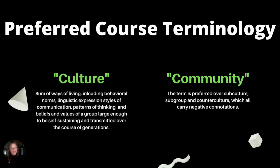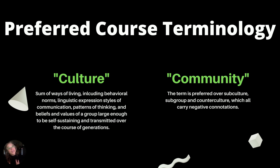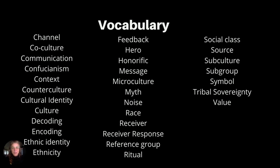That was a lot — what's the takeaway? Here is our preferred course terminology. In this course, we will prefer the terms culture and community. Culture is the sum of the ways of living, including behavioral norms, linguistic expression, styles of communication, patterns of thinking, beliefs, and values of a group large enough to be self-sustaining and transmitted over the course of generations. Community is the term preferred over subculture, subgroup, and counterculture, which can all carry negative connotations. Here is some helpful vocabulary to make sure you're on the right track. This is the end of this lesson.